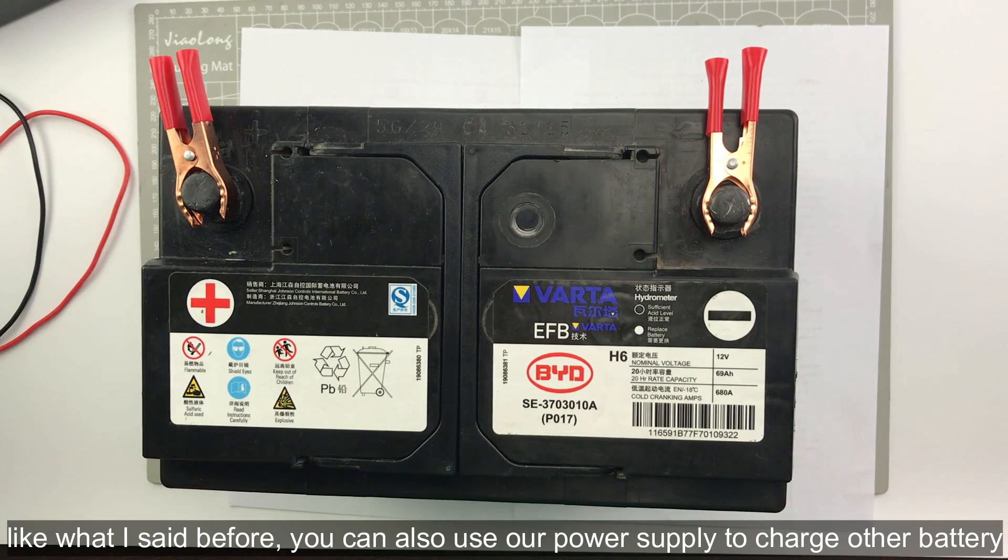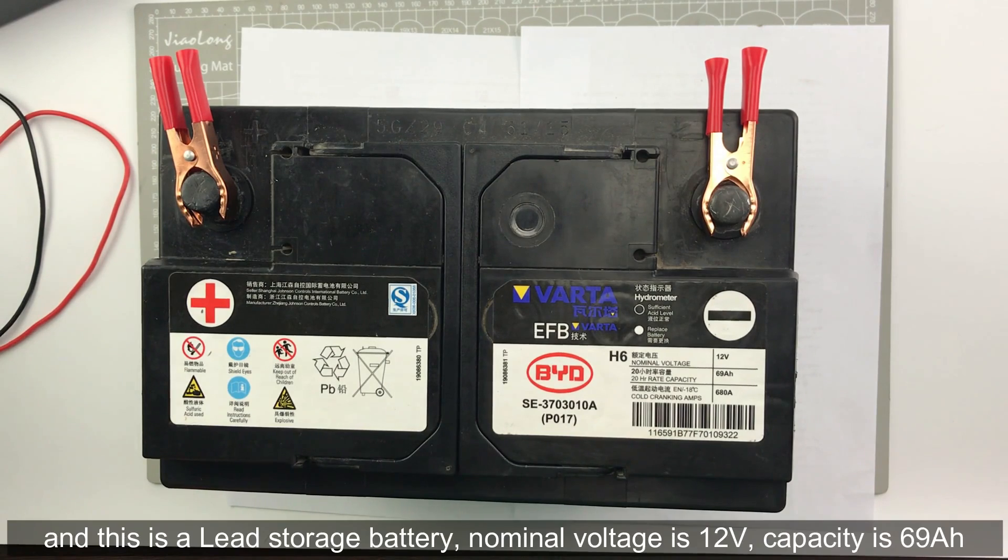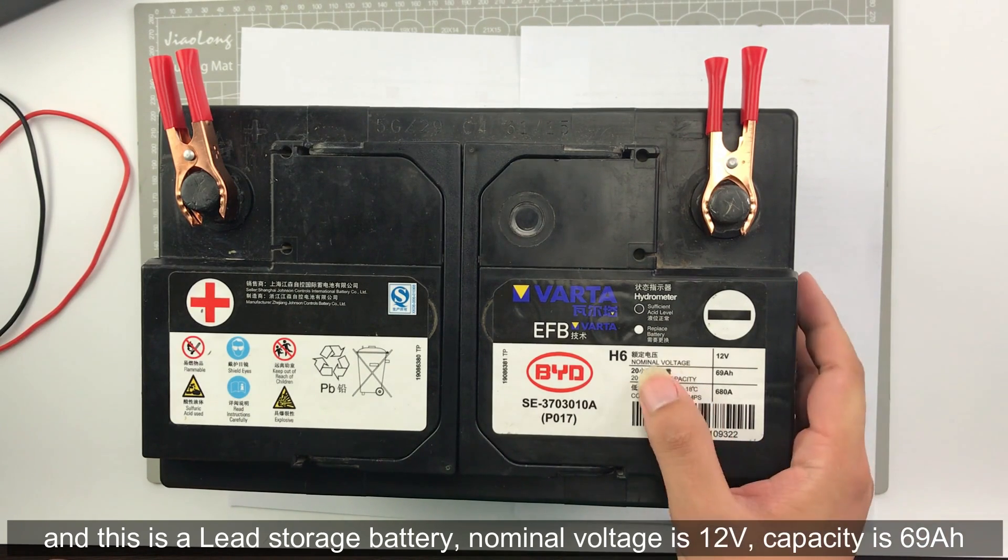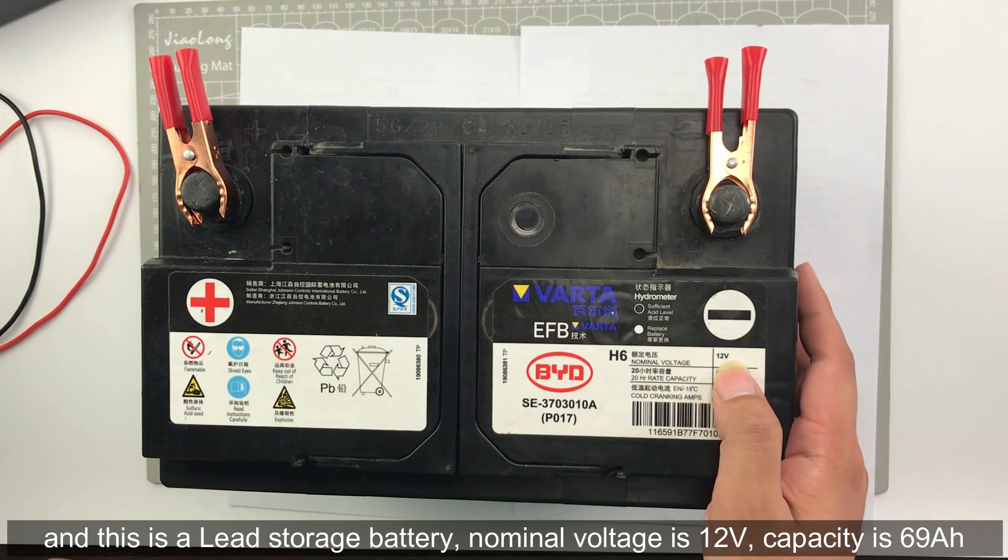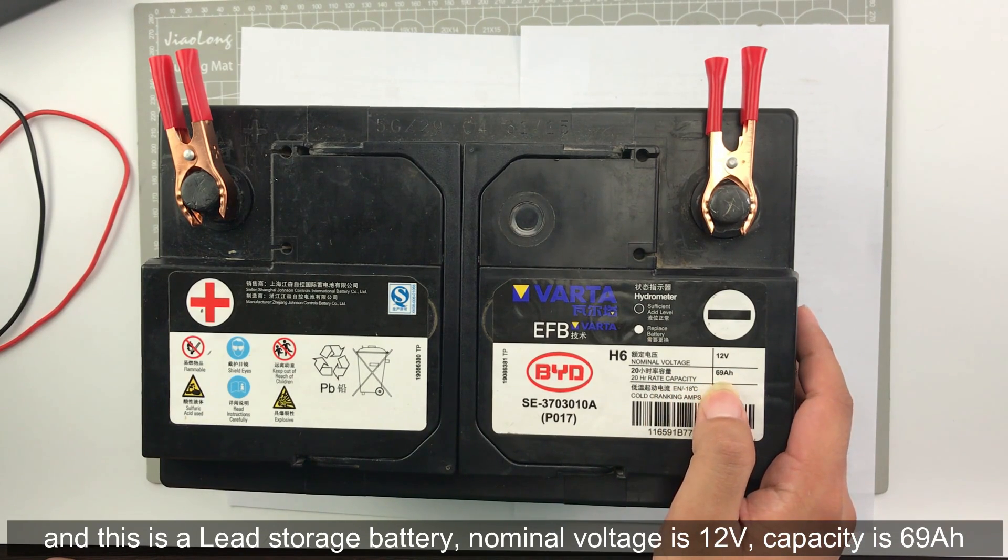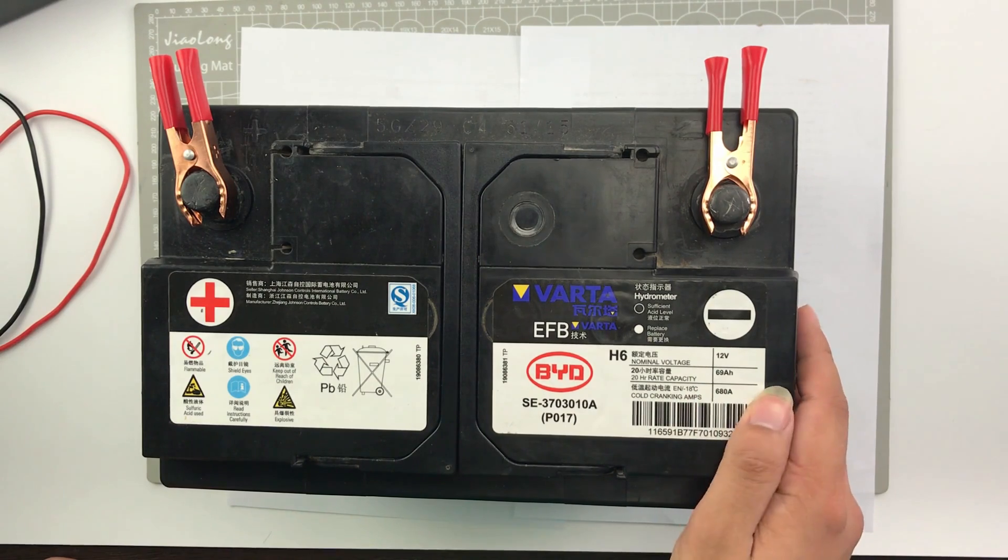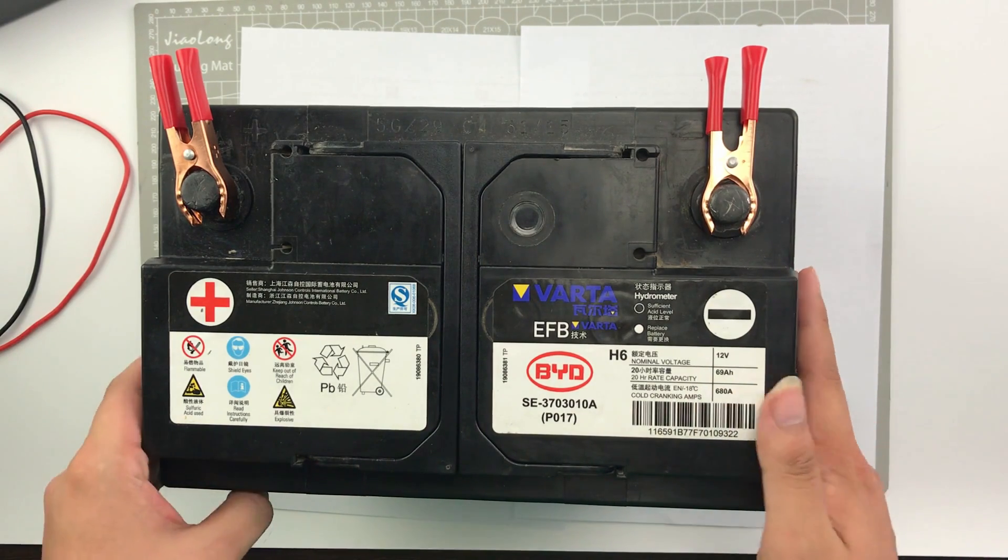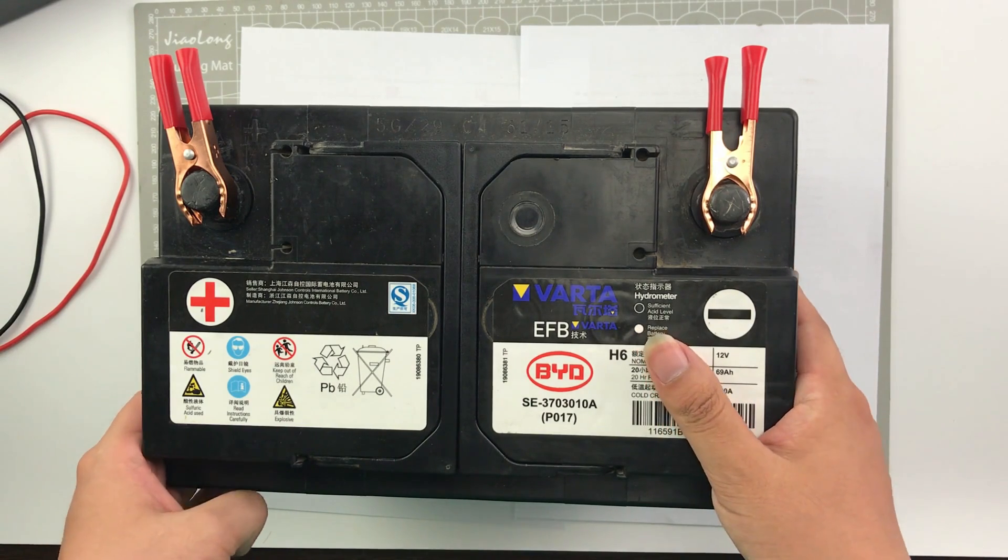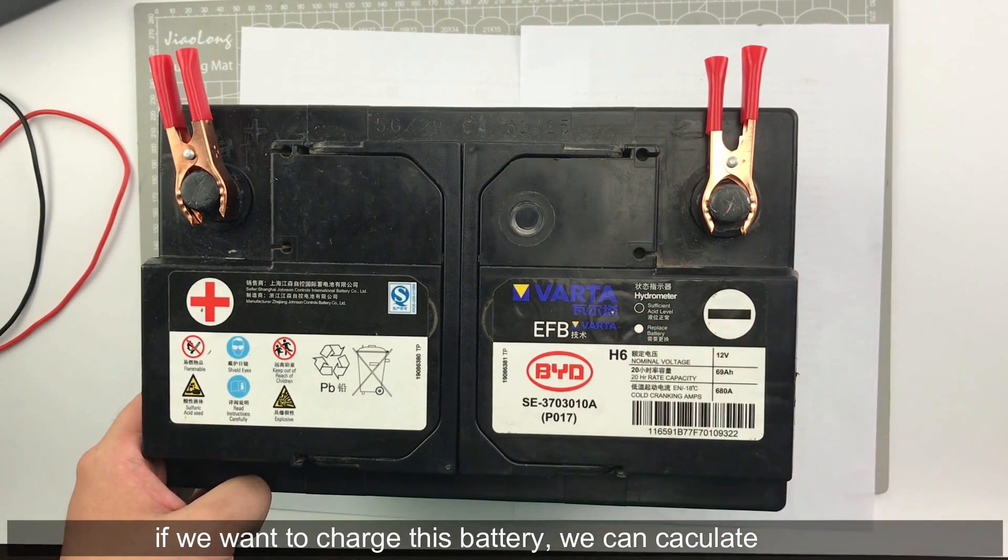Like what I said before, we can also use our power supply to charge other batteries. And this is a lead storage battery. The nominal voltage is 12 volts and the capacity is 6.9 amp hour. It's quite a large capacity.